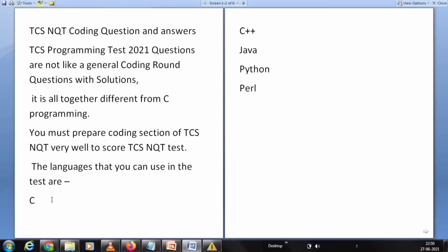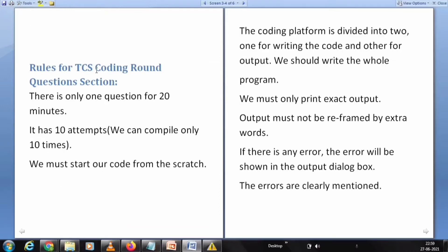The languages that can be used in this test are C, C++, Java, Python, and Perl. The rules for TCS coding round section 2021: it has 10 attempts. We can compile only 10 times.